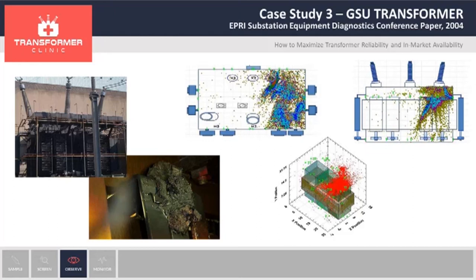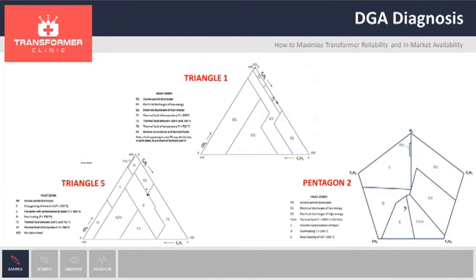So they found it on time. When we look at the DGA, we found an excellent correlation. As you can see on the photograph, there is no paper insulation involved. When looking at the DGA diagnosis, Triangle 1 is telling us we have a high temperature thermal fault on the transformer. Triangle 5 is between carbonization and high temperature fault on the oil. And Pentagon 2 is telling us we have carbonization, which is what we saw on the internal inspection.